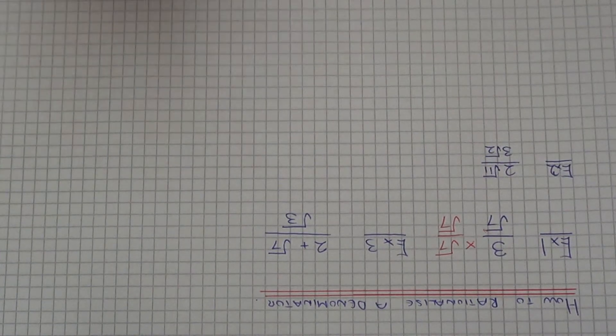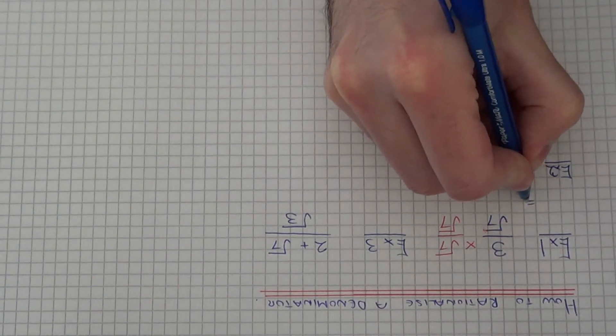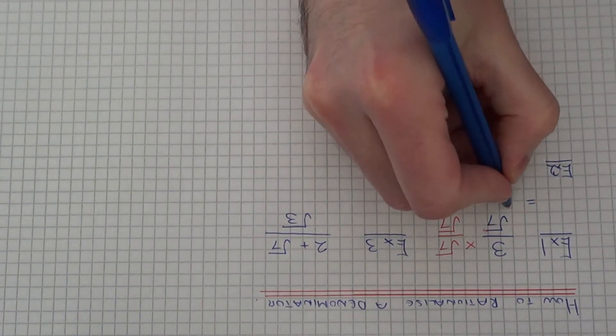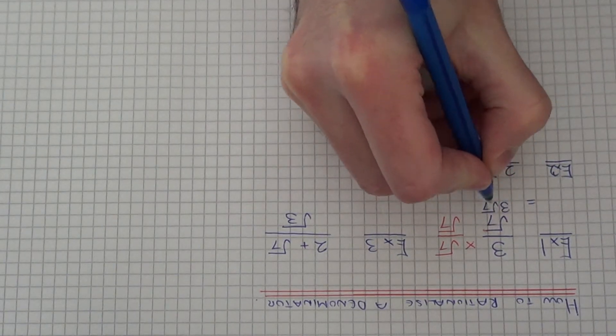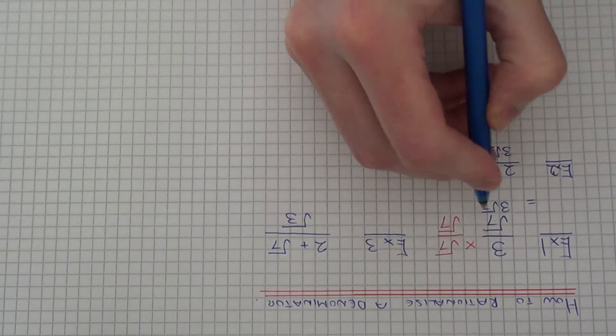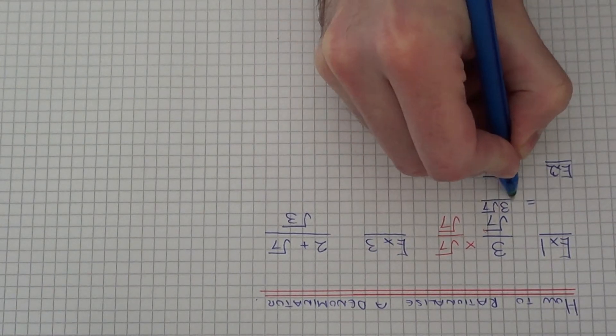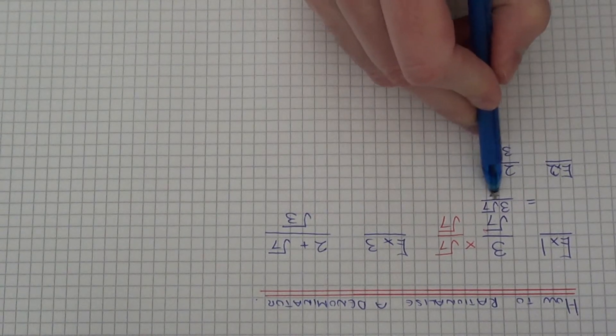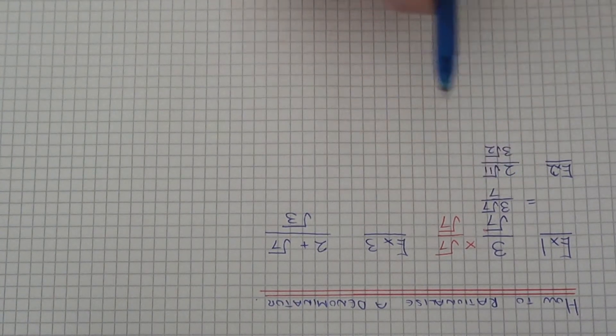So all we have to do now is work this out. So 3 times root 7 will give you 3 root 7. And root 7 times root 7 will give you just 7. So you see it's now a whole number, so it's a rational number.